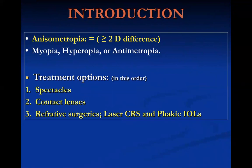Anisometropia is defined as a difference of refraction of two diopters or more between both eyes. The two eyes could be myopic, hyperopic, or antimetropic — meaning one eye is myopic and the other is hyperopic. An important clarification: a difference of two diopters is the definition of anisometropia, but it doesn't mean that a two-diopter difference will necessarily require intervention.